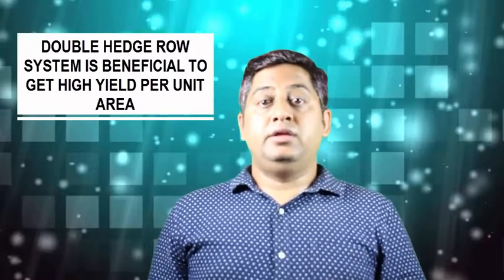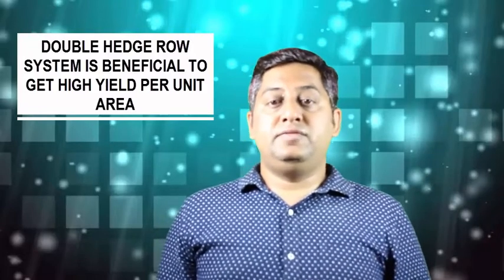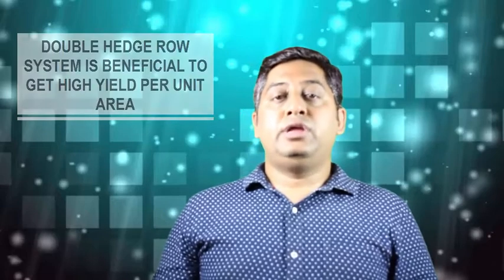In Allahabad Safeda cultivar of guava at Central Institute of Subtropical Horticulture, planting of guava was tried at four different densities: 1.5 meter by 3.5 meter with 2,222 plants per hectare, 3 meter by 3 meters spacing with 1,111 plants per hectare...